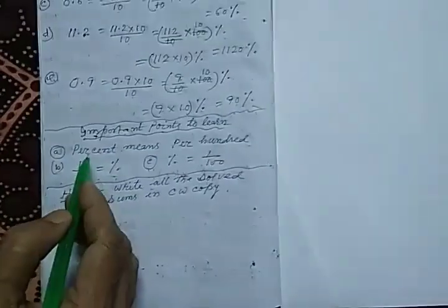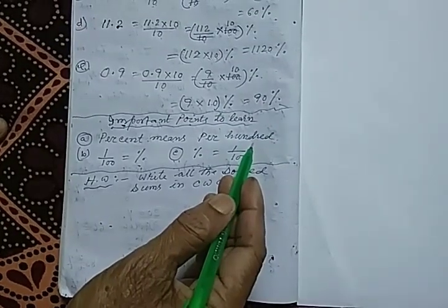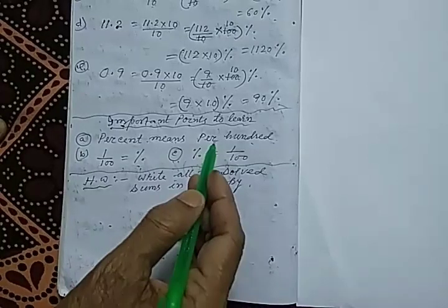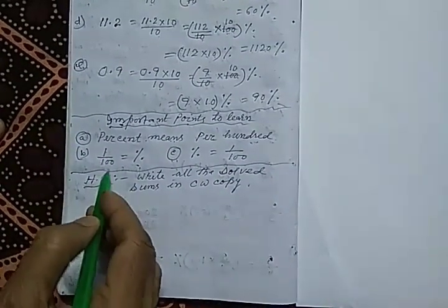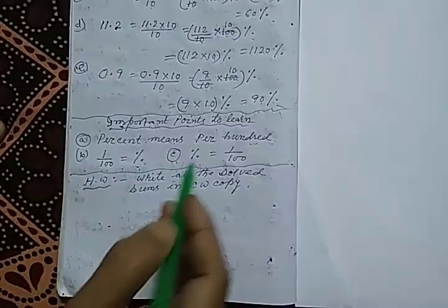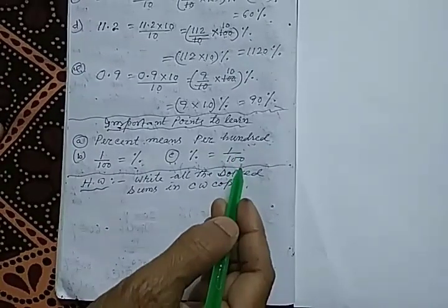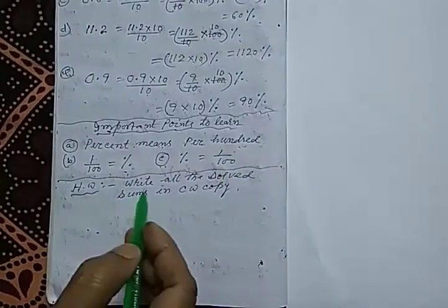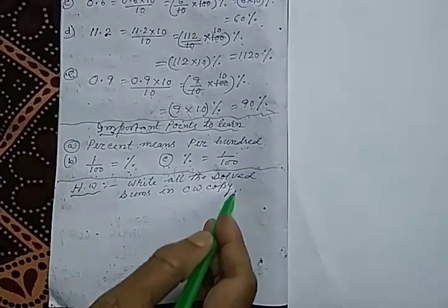I have written some important points to learn. Percent means per 100, and 1 by 100 equals the percentage sign, and the percentage sign equals 1 by 100. Your homework will be to write all the solved sums in your classwork copy. Thank you, students.